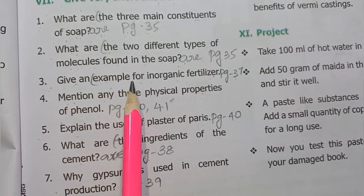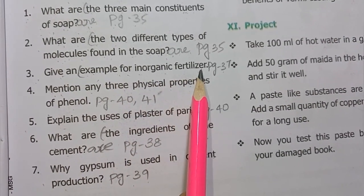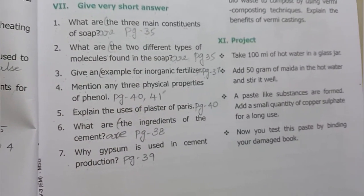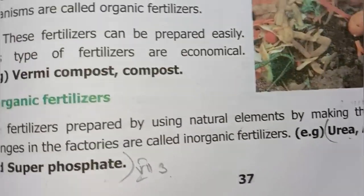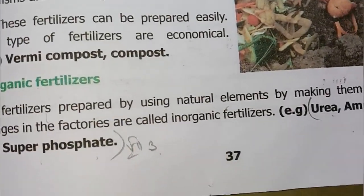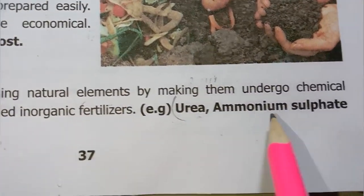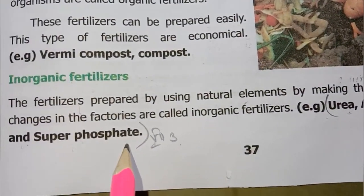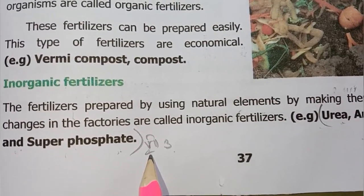Third one: give an example of an inorganic fertilizer. (Page number 37) Examples of inorganic fertilizers are urea, ammonium sulfate, and superphosphate.